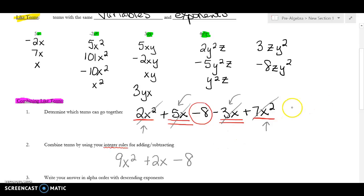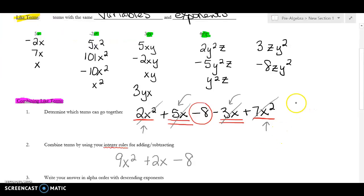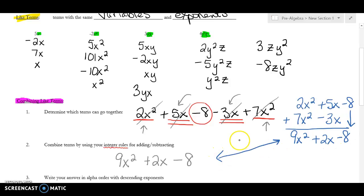Now another strategy that people do is that sometimes they'll write it vertically, and I think when we get to some of the harder problems, some of you will prefer that method. So I put a 2x², a 5x, and a -8. But now you see I have this -3x. It goes underneath the 5x because those are like terms. 7x² goes underneath here. And now I can add going vertically. 2 plus 7 is 9, stays x². 5 minus 3 is a positive 2x. And there's nothing to go with that, so I just bring it down.